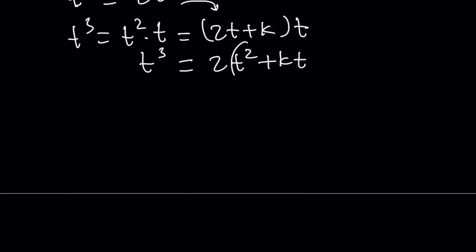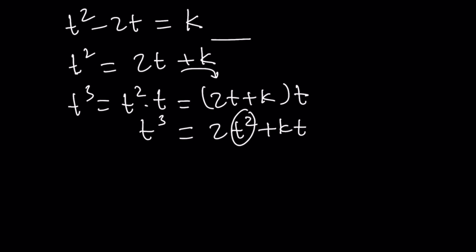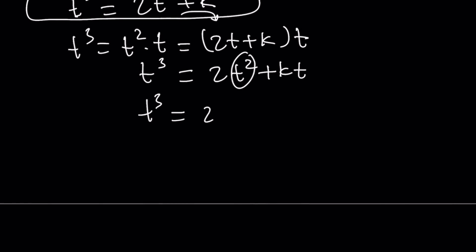But I can replace t squared with 2t plus k again. One more time. We got to keep doing it. So t cubed can be written as 2 times 2t plus k plus kt. But t cubed then becomes 4t plus 2k plus kt.